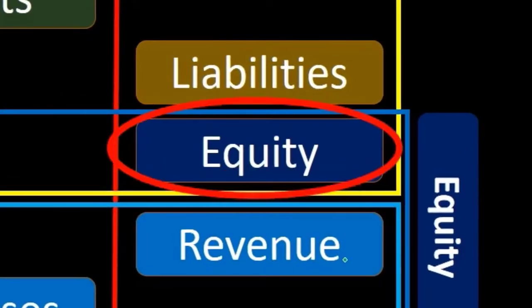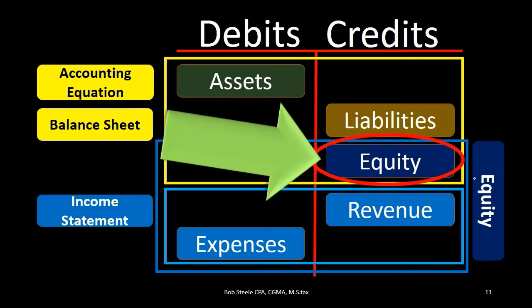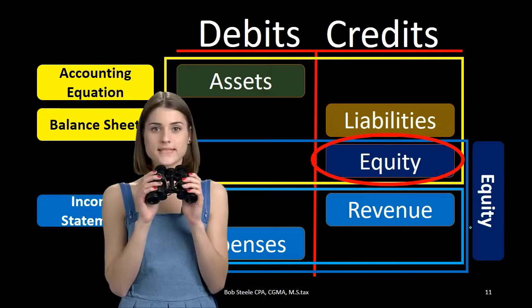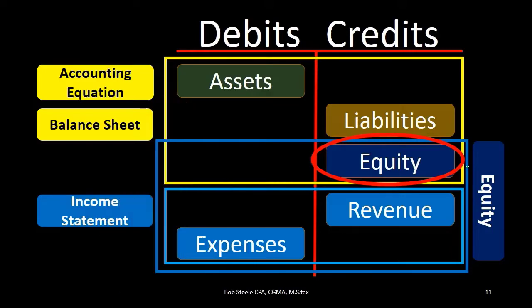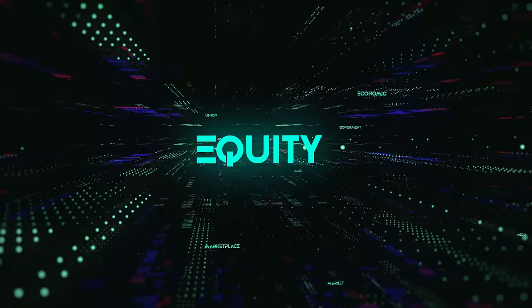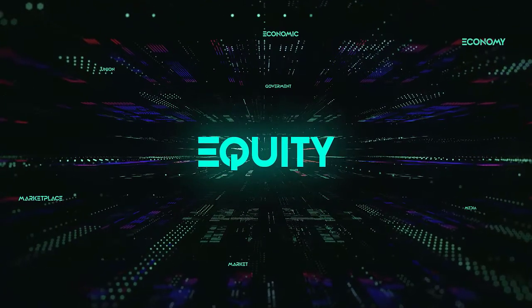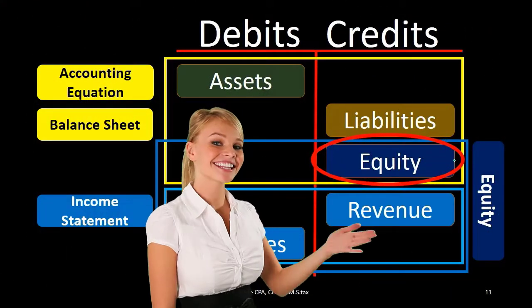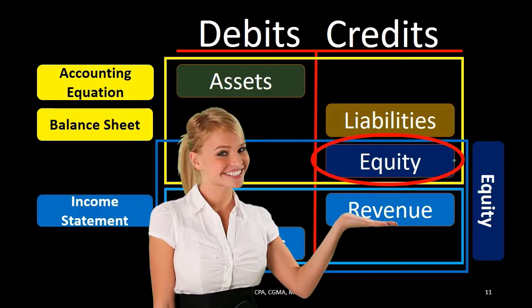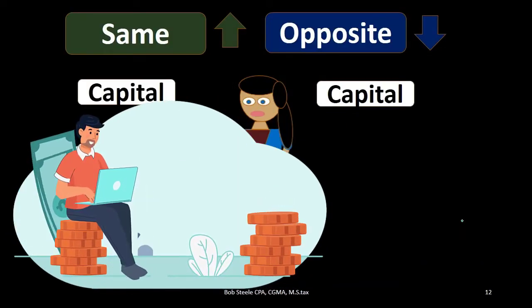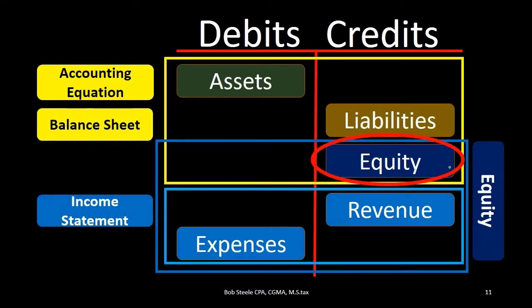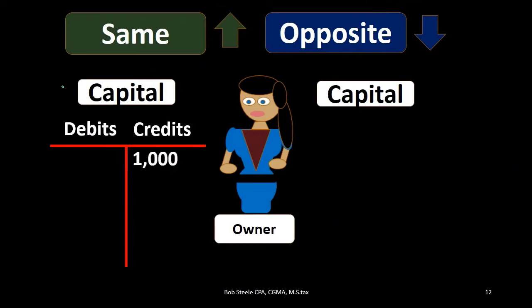Now we'll focus on the equity section. The equity section is a bit confusing because all of these accounts can be considered as equity, as seen in the accounting equation — assets equal liabilities plus equity. We typically break equity out into a capital account or common stock and retained earnings, a draws account, and then the income statement accounts: revenue and expenses. Applying just this one rule, all we need to know is the account and whether it has a debit or credit balance. Here we're dealing with capital, which has a normal credit balance.